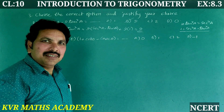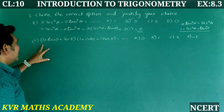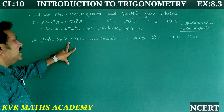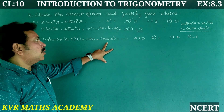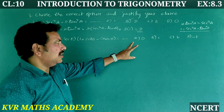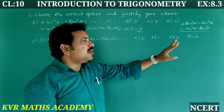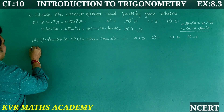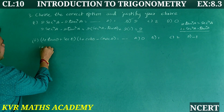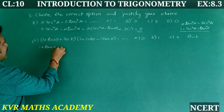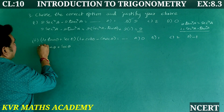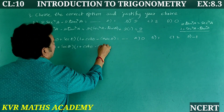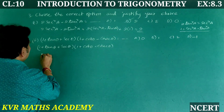Second one: (1 + tan θ + sec θ)(1 + cot θ − cosec θ) is equal to — options: (a) 0, (b) 1, (c) 2, (d) −1. Let us see the solution: expand (1 + tan θ + sec θ) into (1 + cot θ − cosec θ).